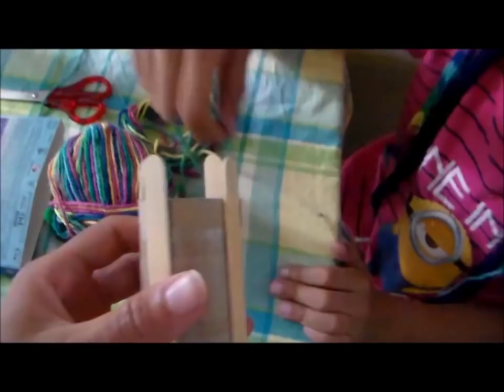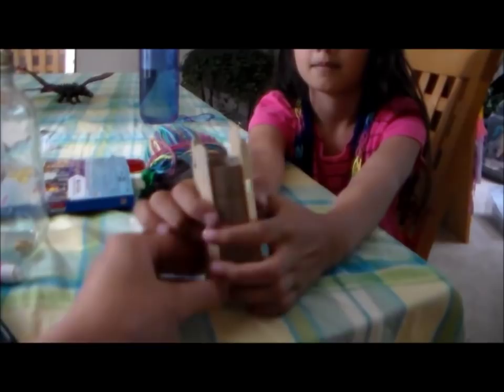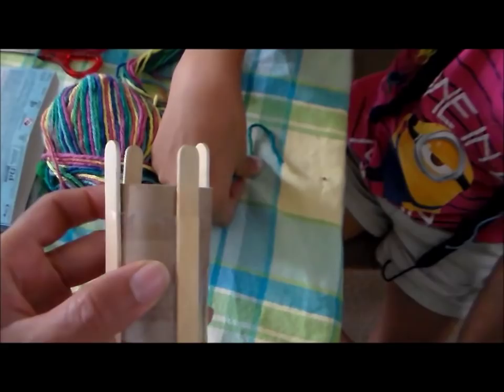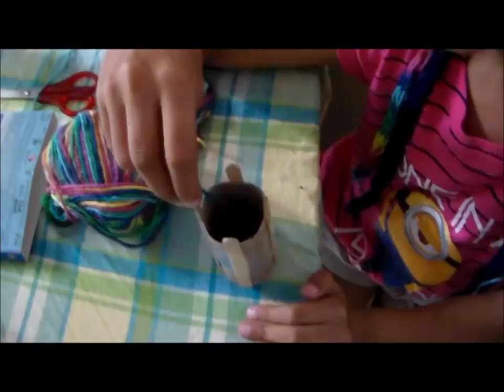And some yarn. When you tape your popsicle sticks, you're going to want to just have it overlap on one end about three-quarters of an inch, so they're sticking up just like this.